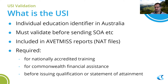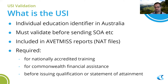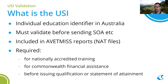The USI is required for nationally accredited training — not required for non-accredited training. If you're delivering non-accredited training, you don't need a form that captures the USI, and you don't need to capture all the AVETMISS information either. It is required for Commonwealth financial assistance if any of you are looking at doing funding, and before issuing any qualifications or statements of attainment.